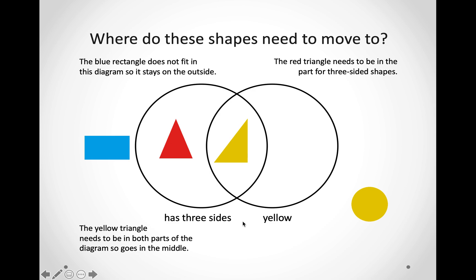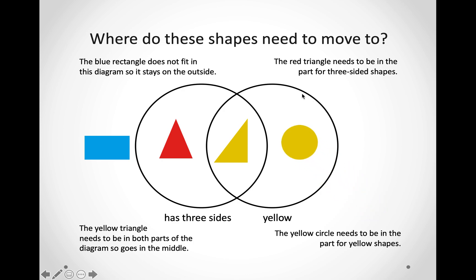Now, let's look at this shape over here. Is it yellow? Yes, it is. But does it have three sides? No, it does not. So, we are going to put it in the part that only says yellow shapes. And now, we have sorted all of our shapes. Well done.